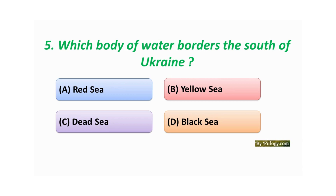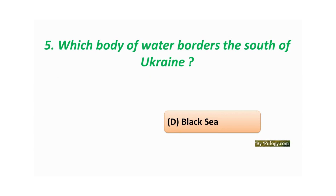Question number five: Which body of water borders the south of Ukraine? Option A: Red Sea. Option B: Yellow Sea. Option C: Dead Sea. Option D: Black Sea. The correct answer is Option D: Black Sea.